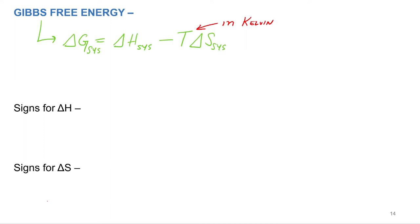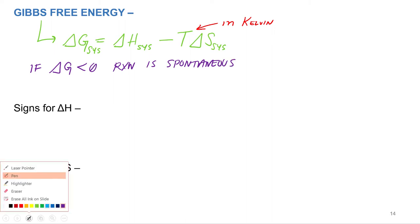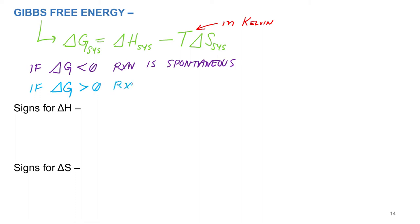So if delta G is negative, the reaction or the change is spontaneous. If delta G is positive, that means the reaction is non-spontaneous.